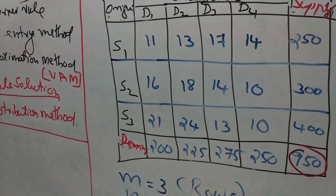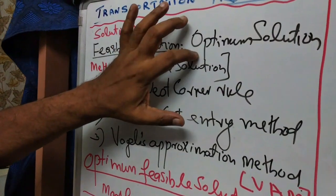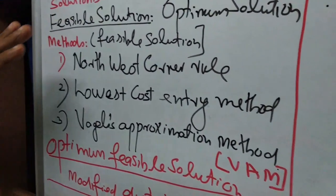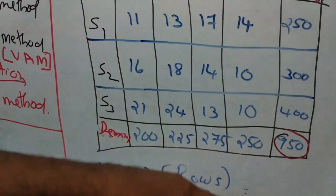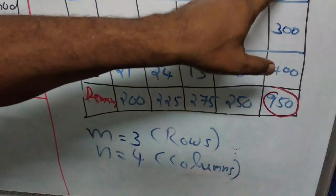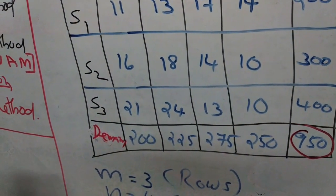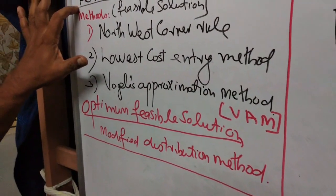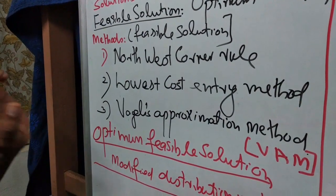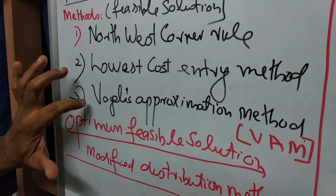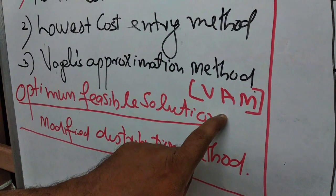The solution is obtained at two levels: one is feasible solution, and the other is optimum solution. Feasible solution means a solution satisfying demand and supply conditions. The total demand is 950 and the total supply is 950, and these conditions are to be satisfied. There are three methods for feasible solution: one is north-west corner rule, second is lowest cost entry method, and third is Vogel's approximation method, generally known as VAM.